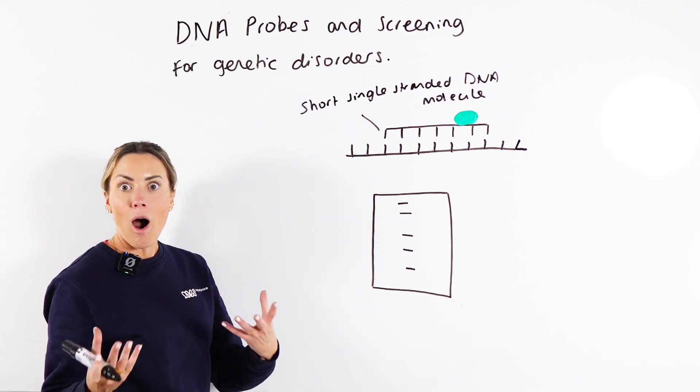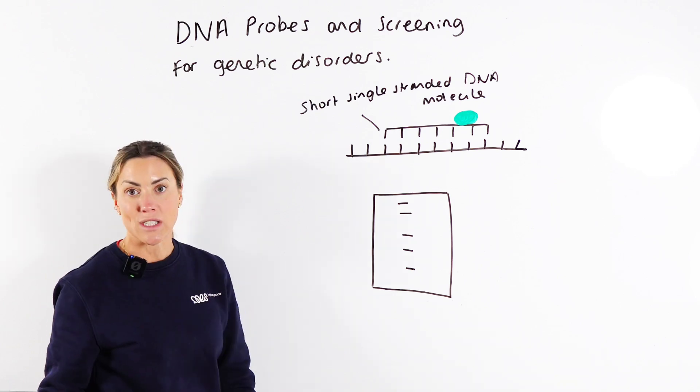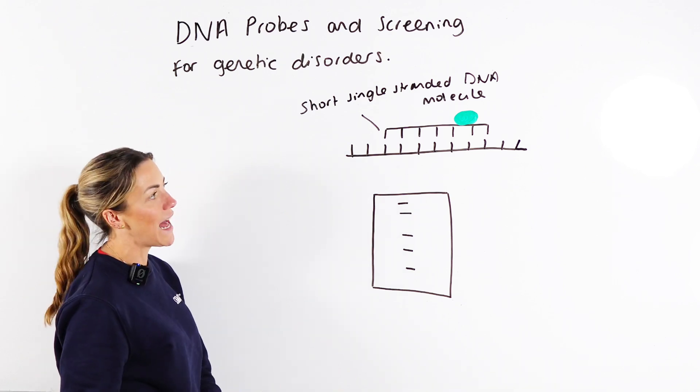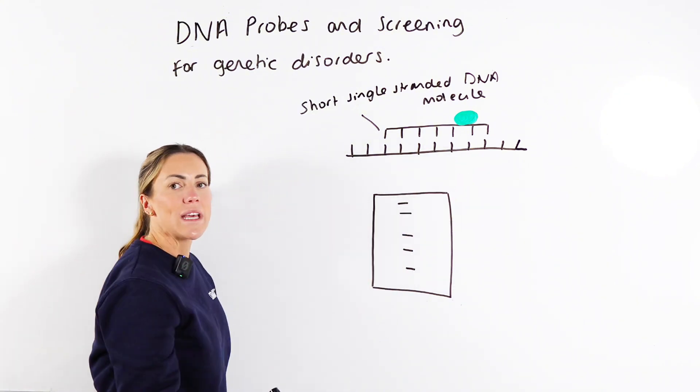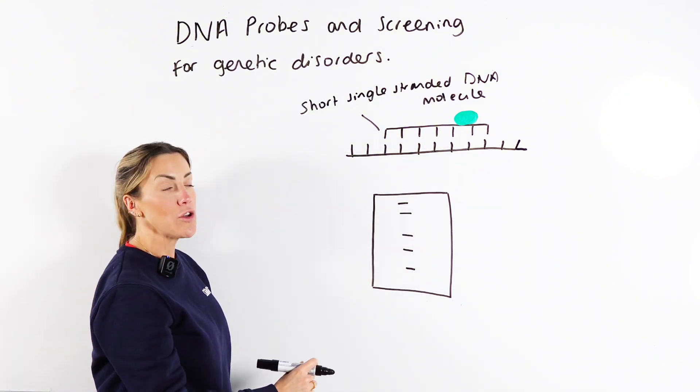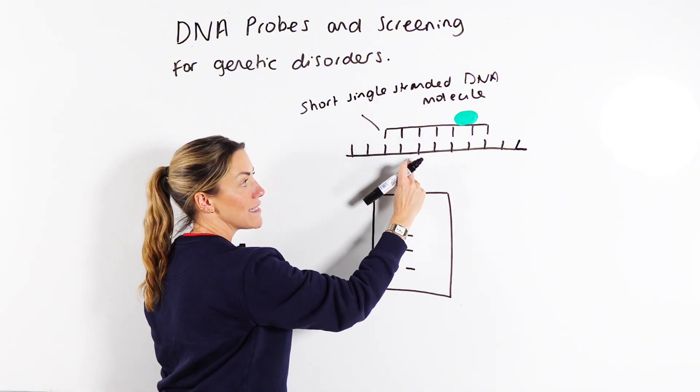So we might be interested in locating a harmful allele that leads to a genetic disorder or a mutated version of an allele, and if we know the base sequence of that allele we can then manufacture a gene probe that has a complementary base sequence.